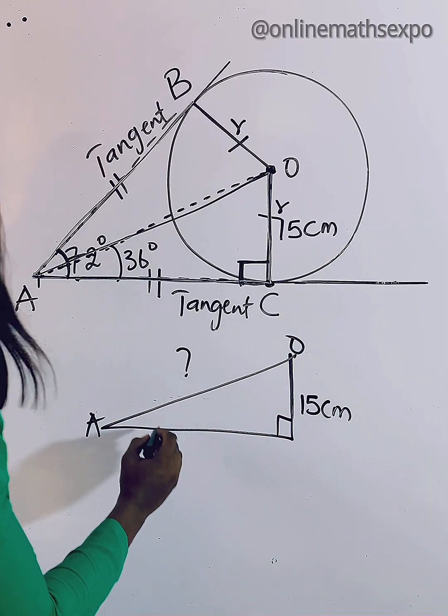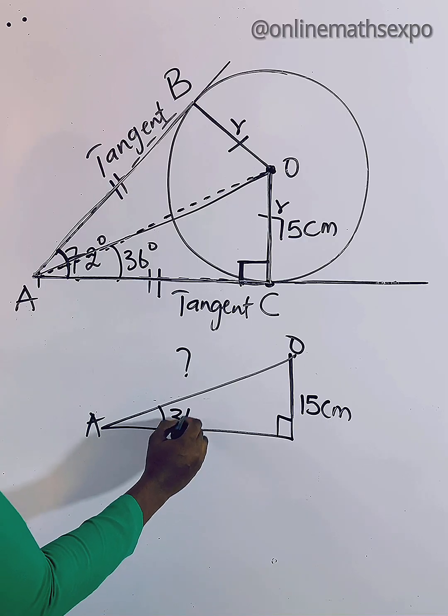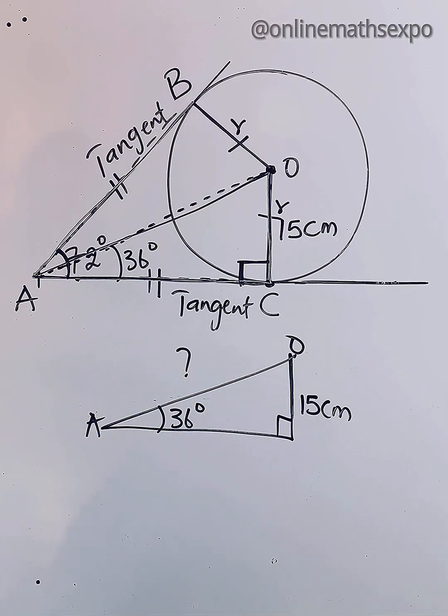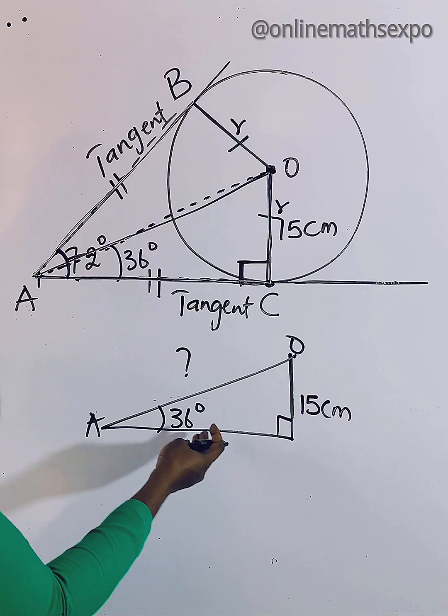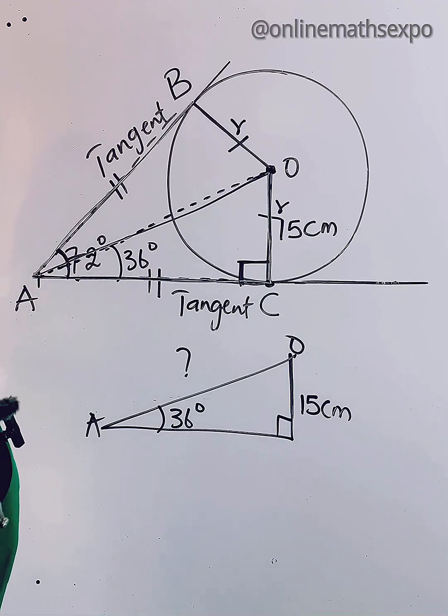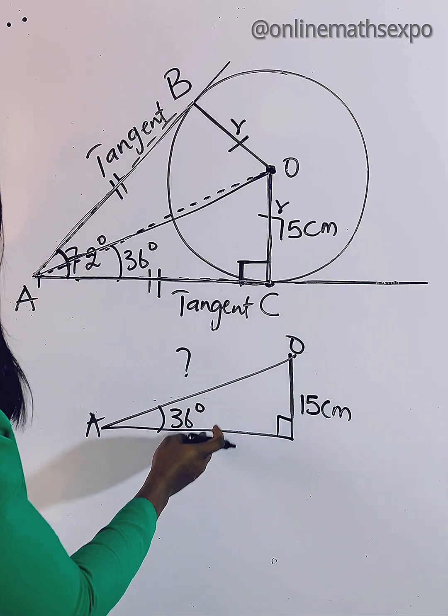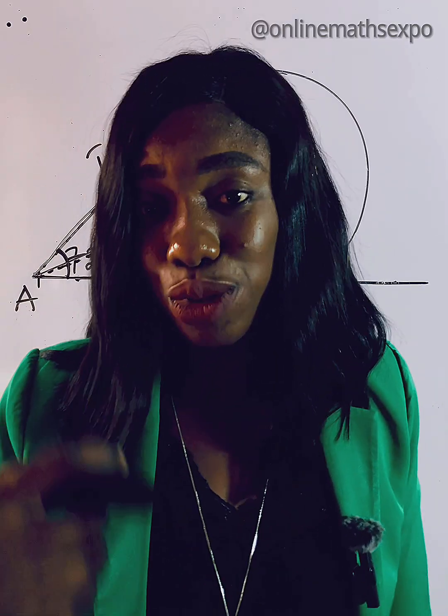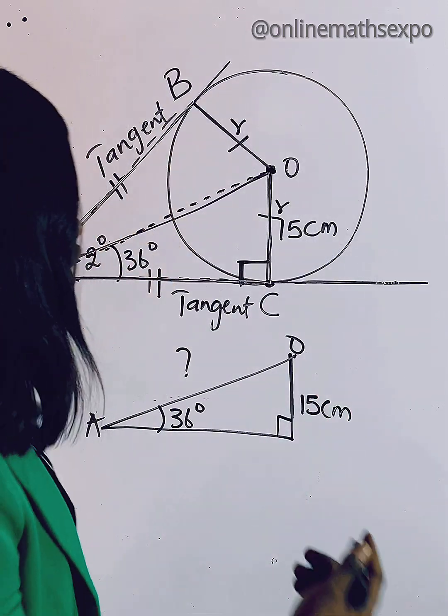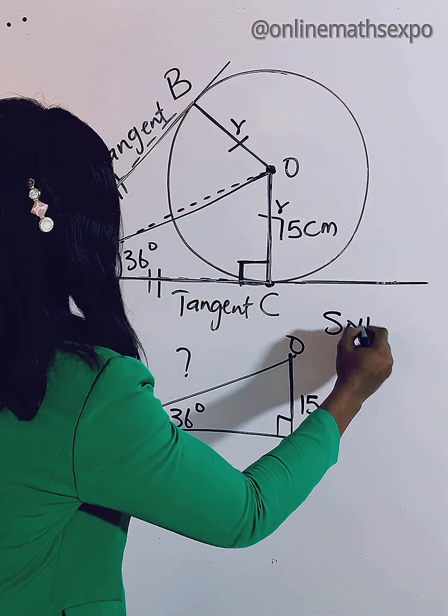Now to find this - this angle is already 36 degrees - so how do you find this length? You just need to remember that this has formed your right triangle, and whenever you have a right angle triangle and you are working with the sides and the angle, just remember to use your trigonometric ratio.